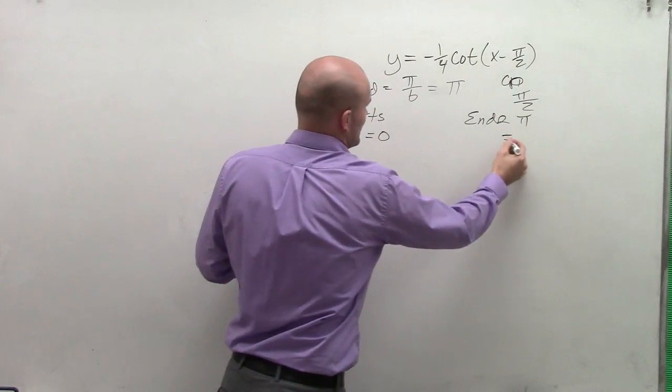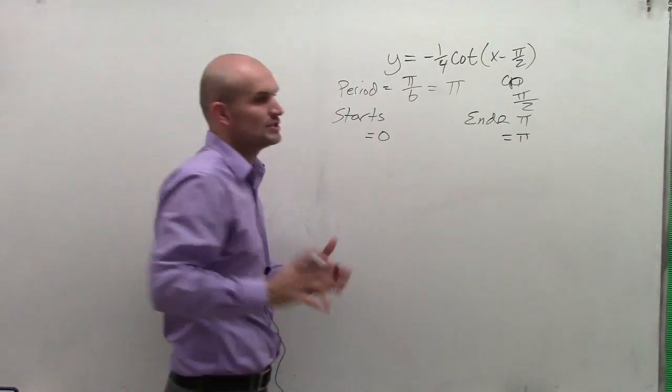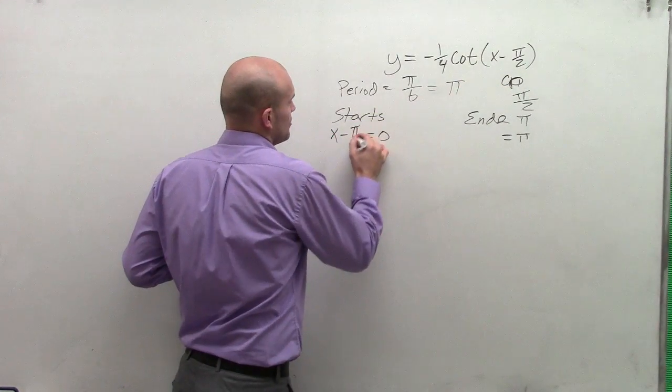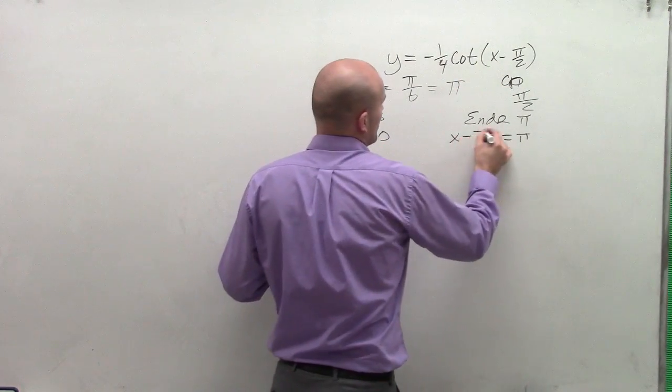Now to see how our graph is going to change our initial period, we take what's inside the function and we set it equal to our start and our end of our initial period.